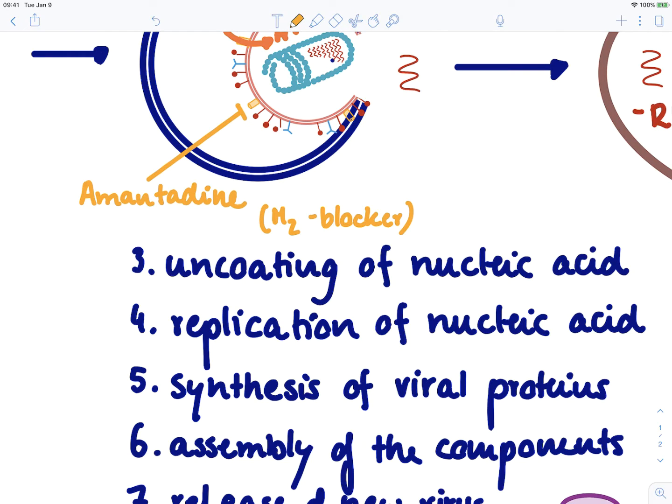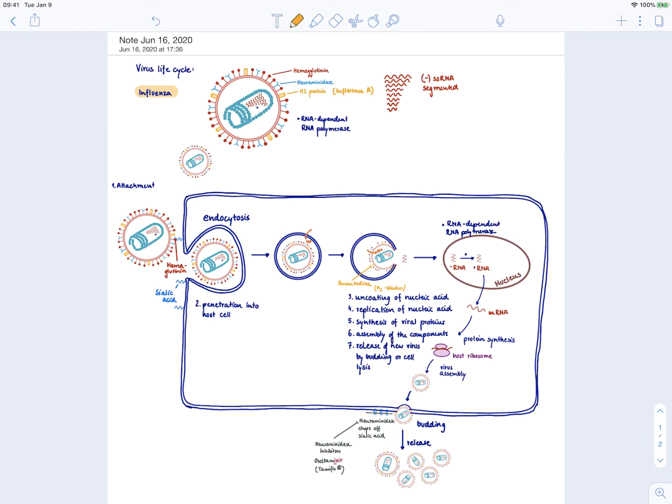But remember that M2 protein is only found in influenza A, so it would not have any effect on influenza B. It's also from the FDA not generally recommended anymore. I also want to mention that amantadine is a drug that is used to treat Parkinson disease. It is also an NMDA receptor blocker.